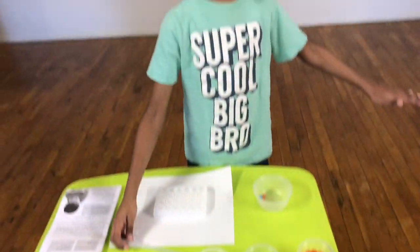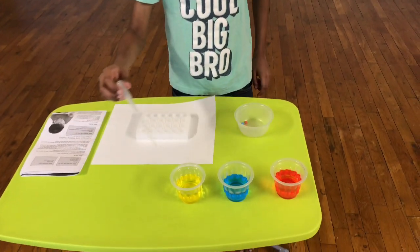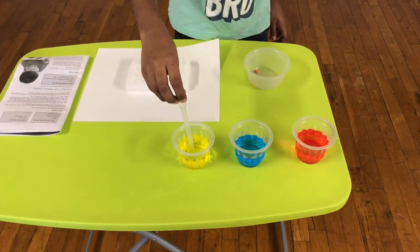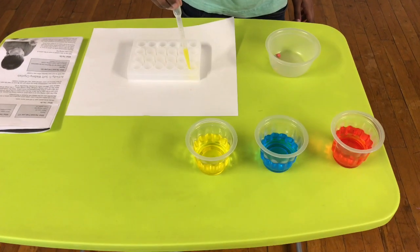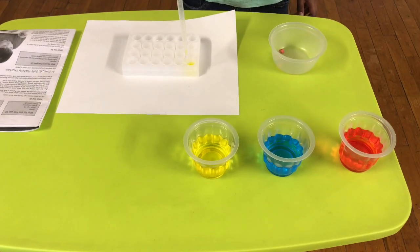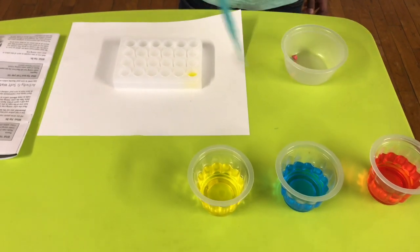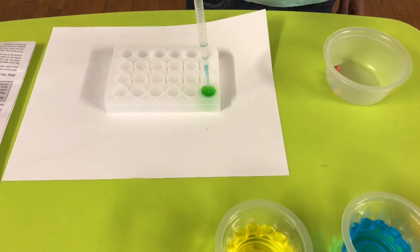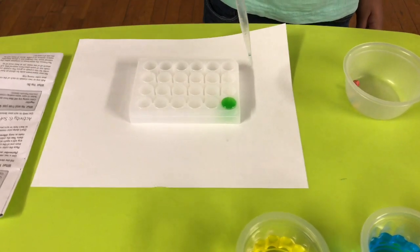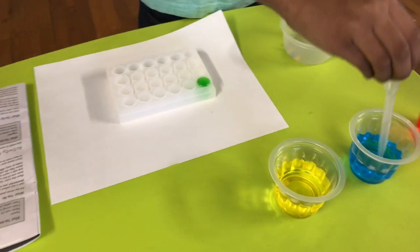We're good. Now we're going to make all our primary colors into secondary colors. First, let's mix some yellow with some blue. You want to see what happens? Wow, green is here!